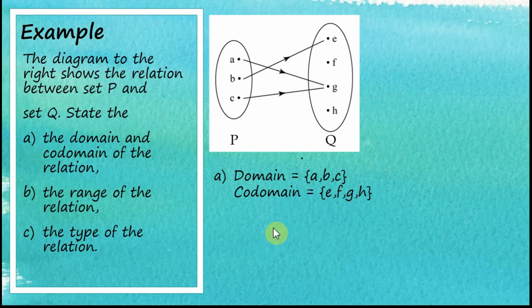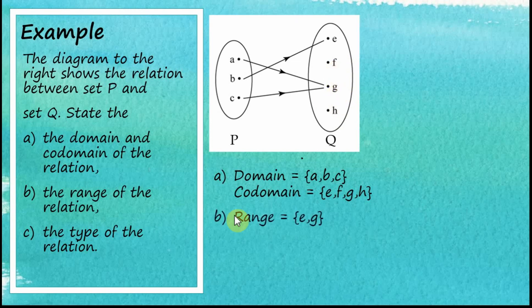The range only consists of images that are mapped by an object. In this case, only E and G are images — F and H are not images because no object is mapped to them. Therefore, the range is just E and G, while the codomain is E, F, G, H. For the type of relation, we have two objects mapped to one image. Therefore, this is a many-to-one relation.